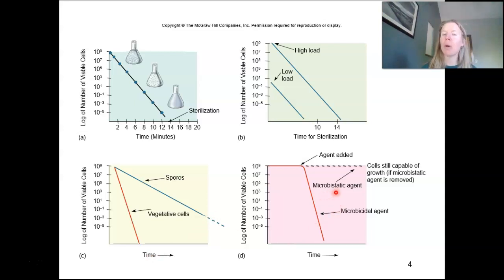We already mentioned that what specific organism it is can make a difference in how effective the agent of death is. And oftentimes, particularly with patient samples, you're looking at a mixture of those sorts of things. Other things that can make a difference, we already talked about this difference between spores and vegetative cells.